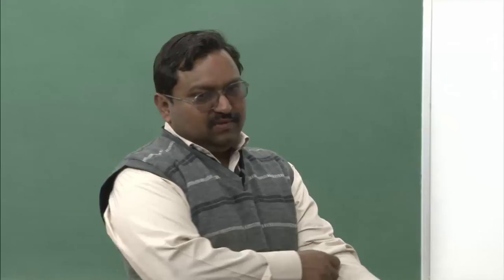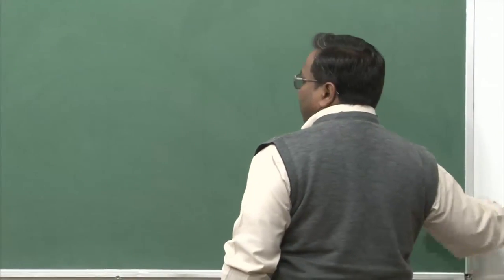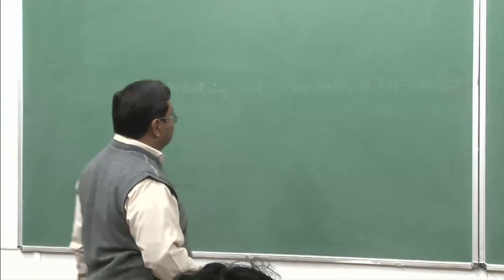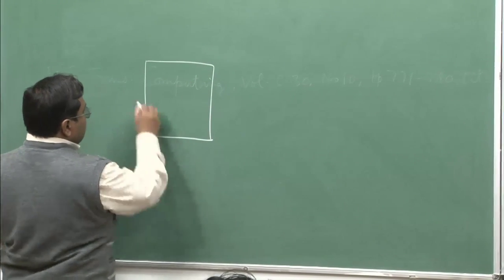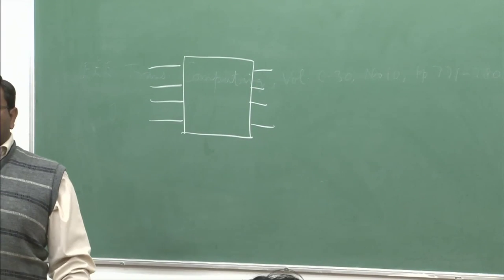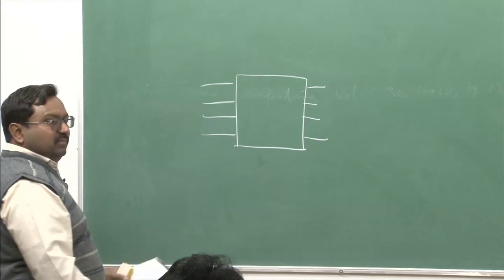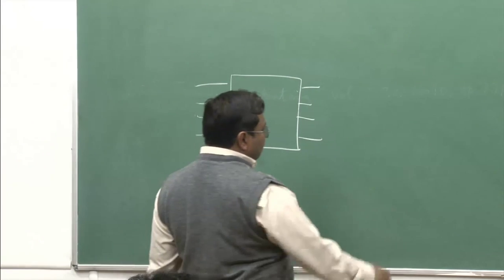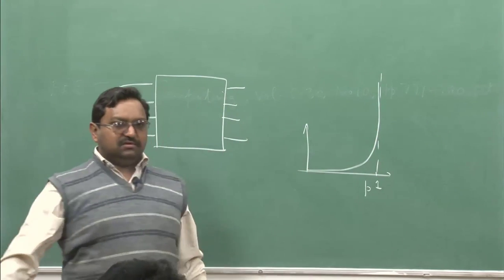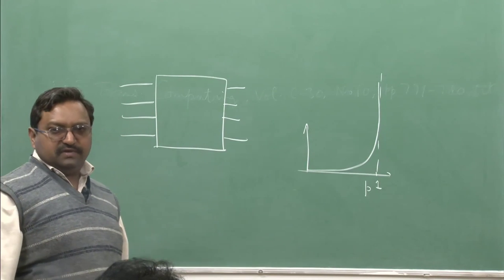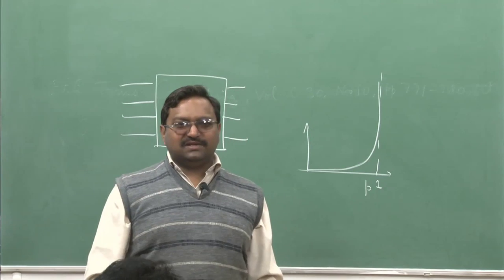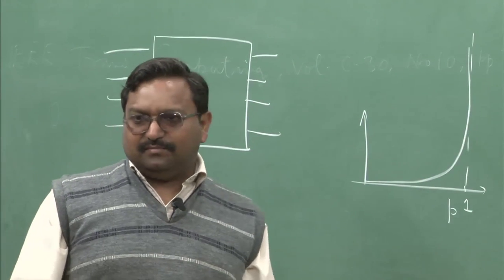Let me make a quick recap of where we left last time. We had taken a simple crossbar, considered two possibilities: using input queues with no speed-up factor, and an output queued system. The output queued system can operate until the load becomes equal to 1, at which point the queue length and delay both explode to infinity. It mimics a Markovian arrival, deterministic departure, single queue, infinite buffer system.